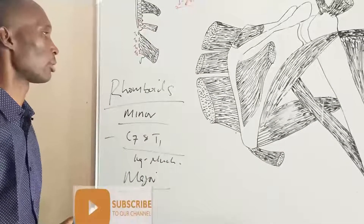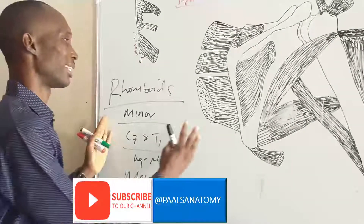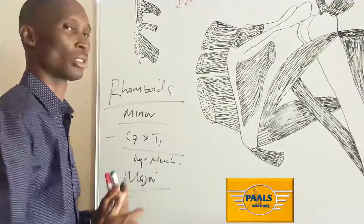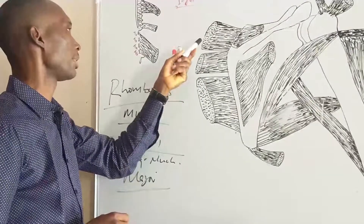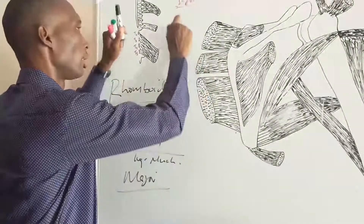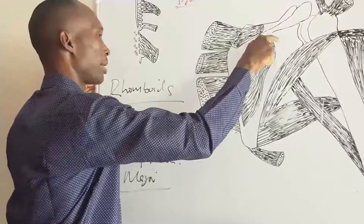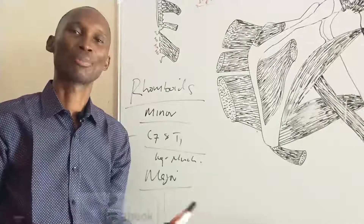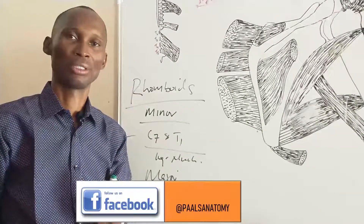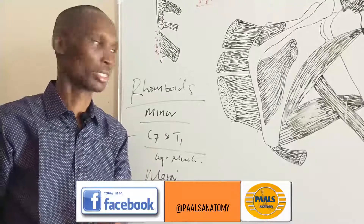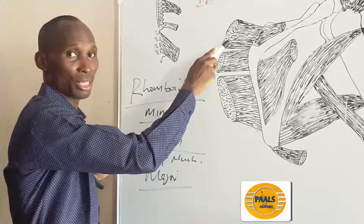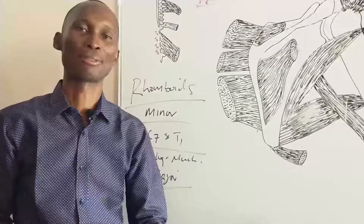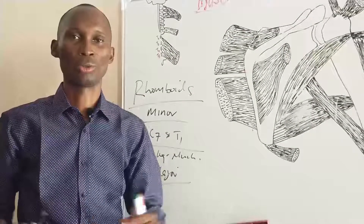Both rhomboids perform the same actions. They are involved in retraction of the scapula — pulling the scapula medially. Also, alongside the levator scapula, they bring about downward rotation of the scapula. The nerve supply is the dorsal scapular nerve — C5 — also called the nerve to the rhomboids. The same nerve supplies both the levator scapula and the rhomboids minor and major.